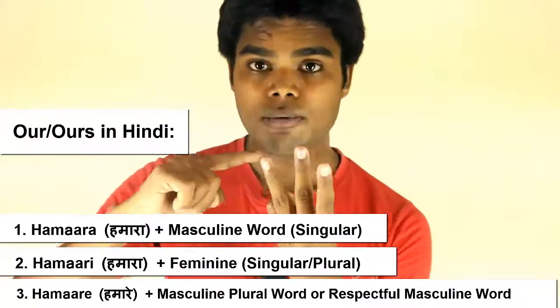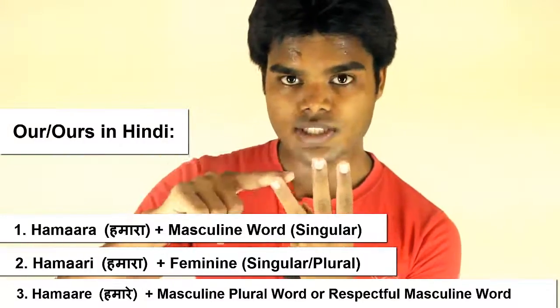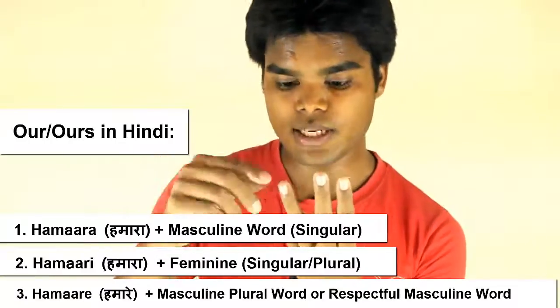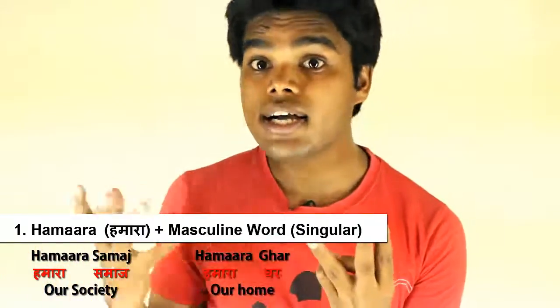The three words from 'hum' work like this: after 'hamara' you have to use a singular masculine word. For example, 'hamara samaj' means 'our society,' and 'hamara ghar' means 'our home.'